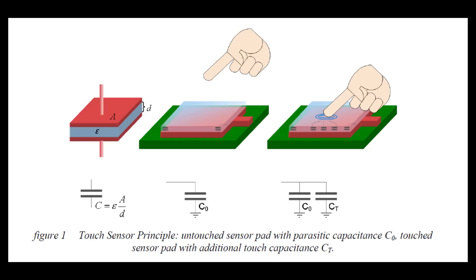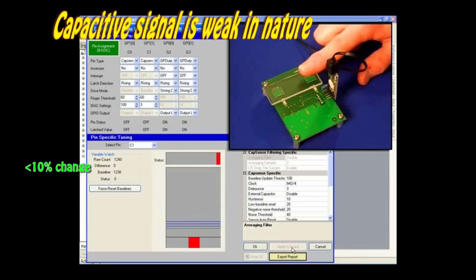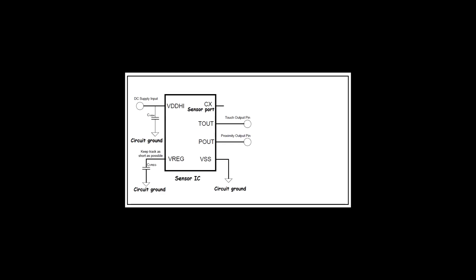Capacitive sensors work by detecting the change of capacitance introduced by the finger touching near the electrode. Such change is so small that detecting it unambiguously is challenging and has become the primary task for the application design. The capacitance that the sensor IC is measuring is from a sensor port with respect to the circuit ground.